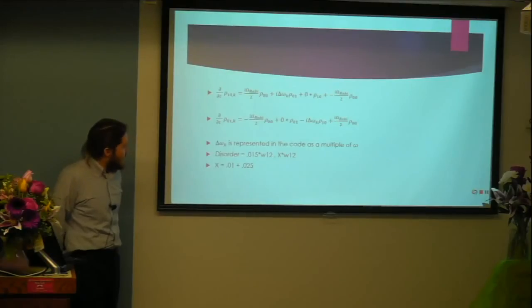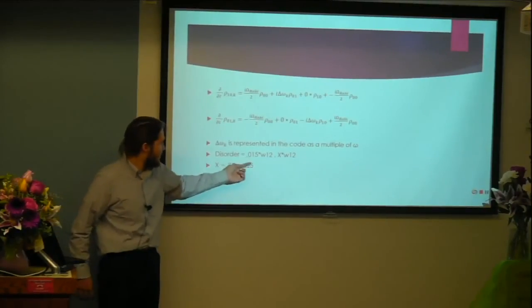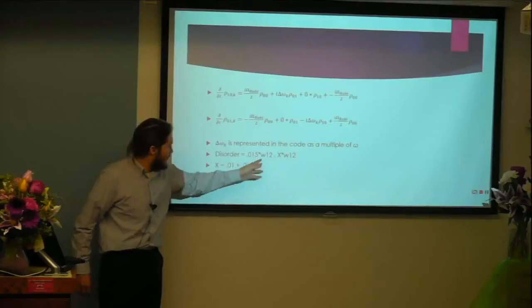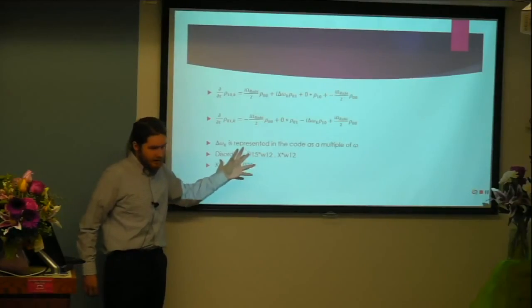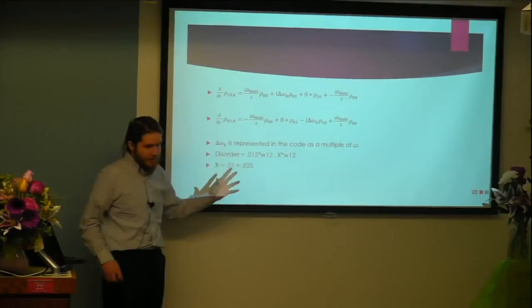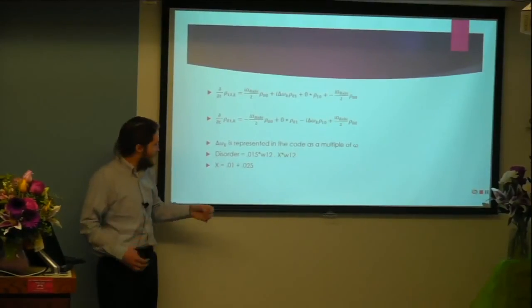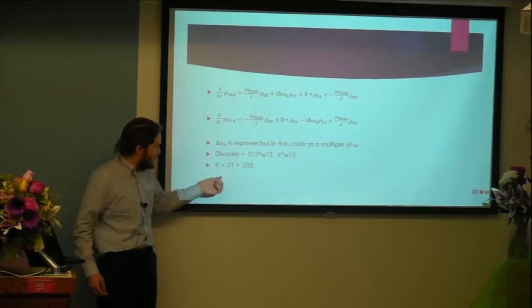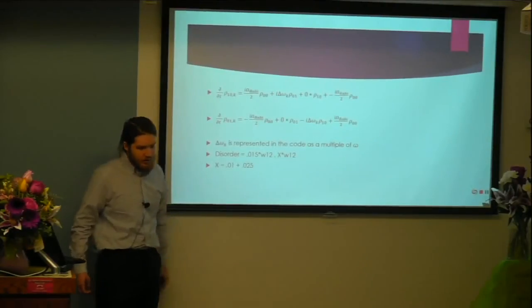In the MATLAB code, delta-omega-k is represented as a multiple of omega. As you can see here, the original value was 0.015, where x represents any value that would differentiate between the different speeds at which they move, starting at 0.01 in 0.025 increments up to 0.02.